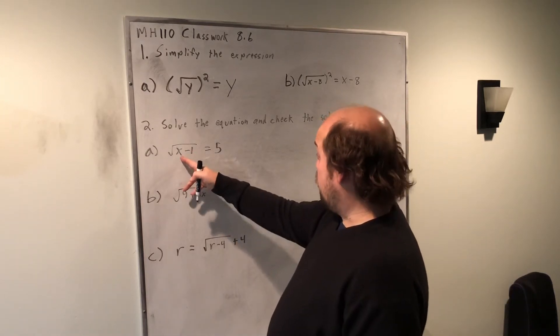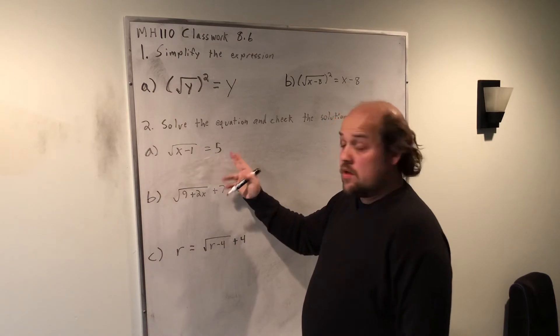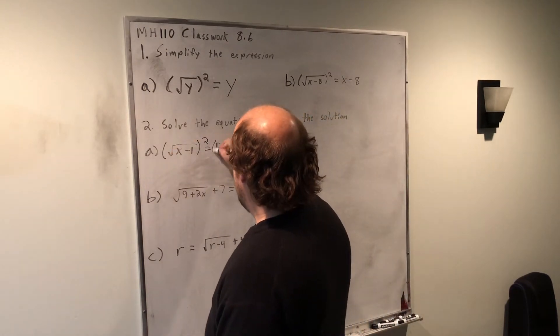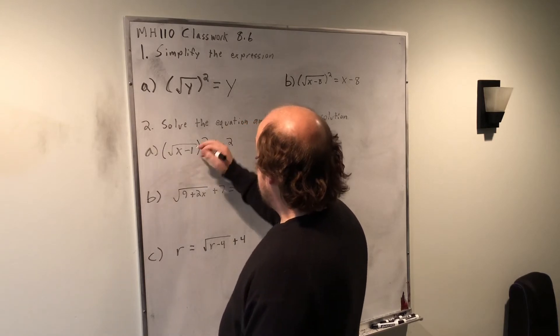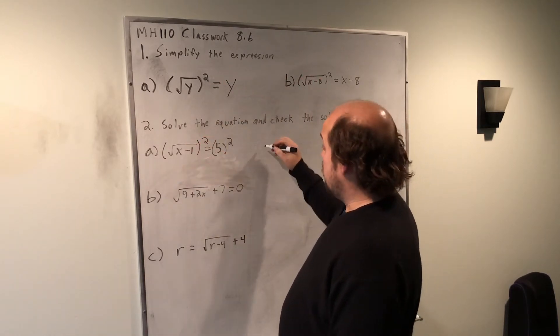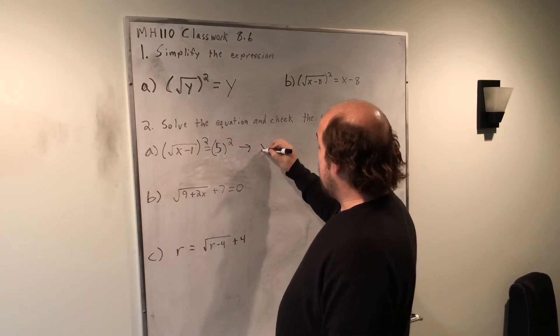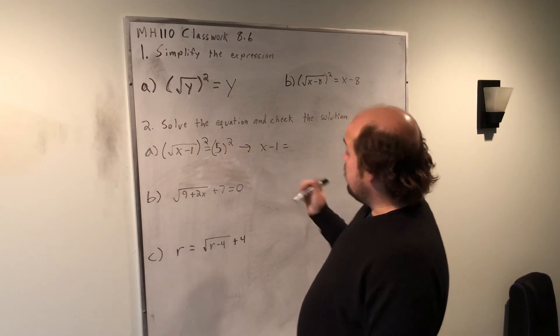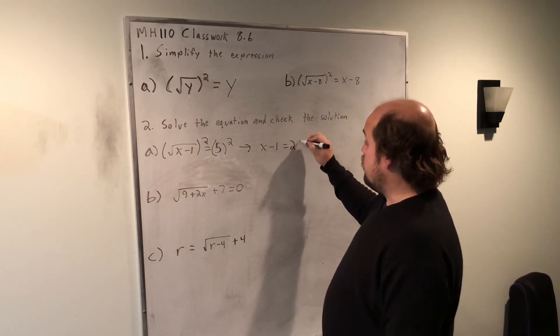So for this first one, we have a root that's equal to a positive number. That means we can do the next step of squaring both sides. When I square the left-hand side, exactly what happened above happens here. The squared and the root undo each other, so it just becomes x minus 1 on the left-hand side. On the right-hand side, 5 squared is 5 times itself, or 25.